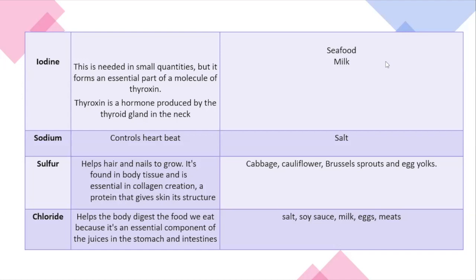Next we have a mineral called sulfur. Sulfur helps hair and nails to grow. It's found in body tissue and is essential in collagen creation — a protein that gives skin its structure. Sources include cabbage, cauliflower, Brussels sprouts, and egg yolks. If you look at the back of nutrient supplements that say 'hair and nails,' more often than not they have a good amount of sulfur in them.